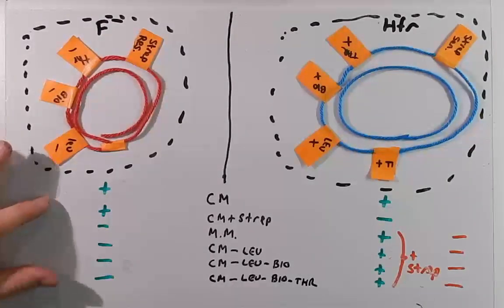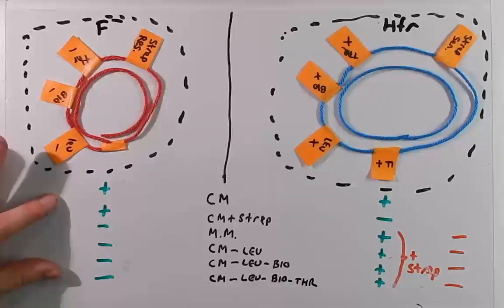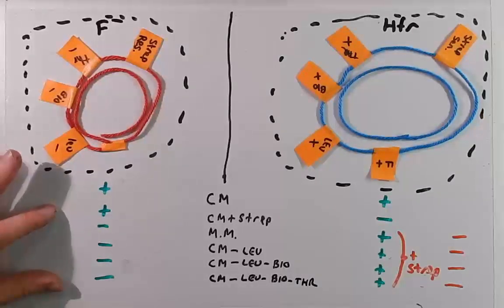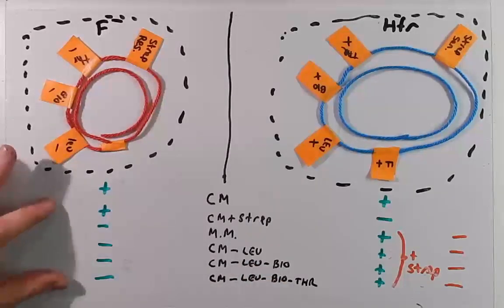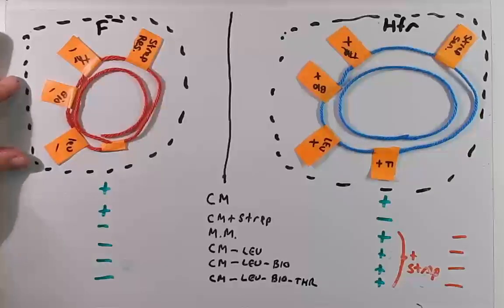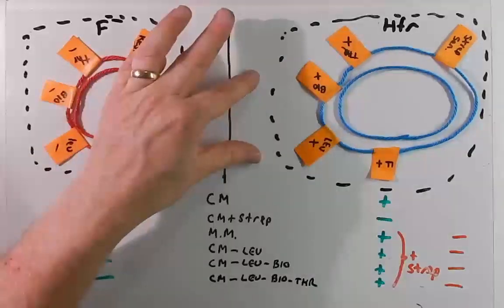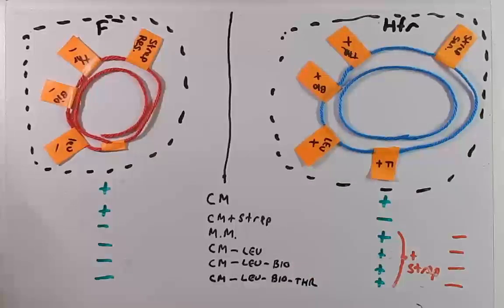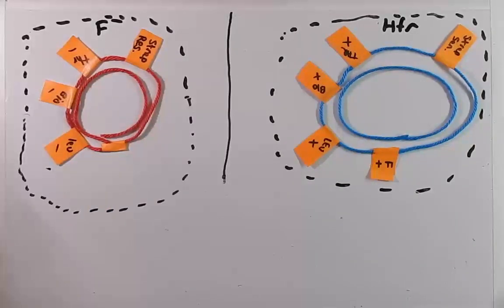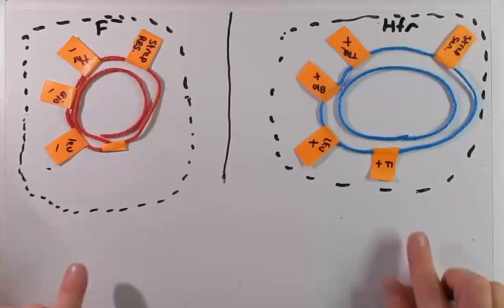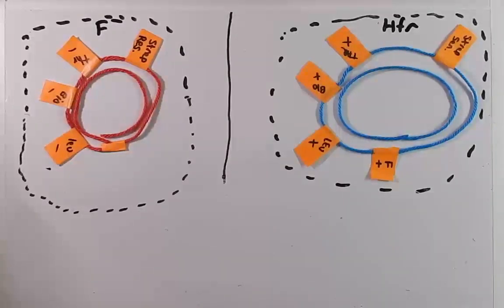In order to make this F-minus strain capable of growing without leucine, biotin, or threonine in the media, it has to acquire those genes. It's going to acquire those genes from the HFR strain. So now what we're going to do is allow these two cells to interact with each other and allow conjugation to occur. Let's remove our fictitious wall here.